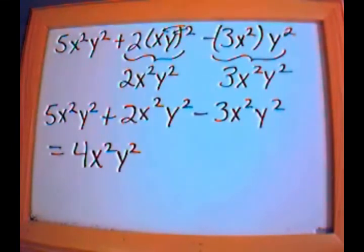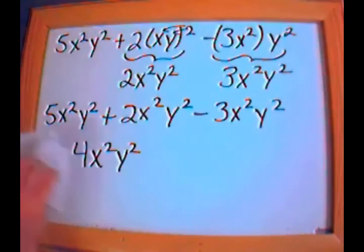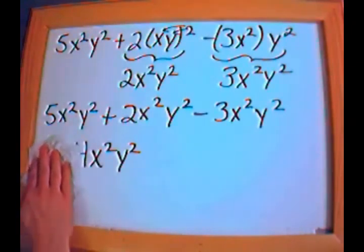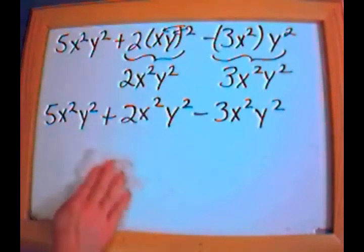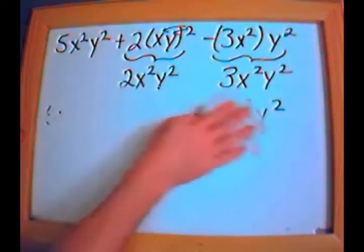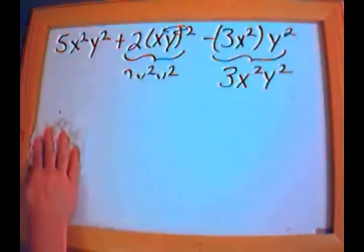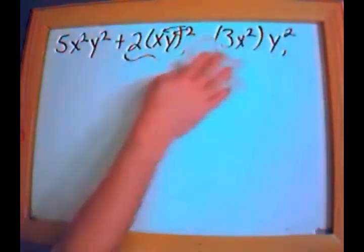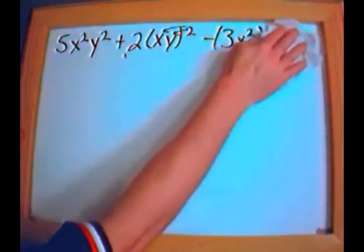Pretty much the only time you can add things together in algebra is if the variables to the right of the numbers are exactly the same, including the exponents and the variable letters.